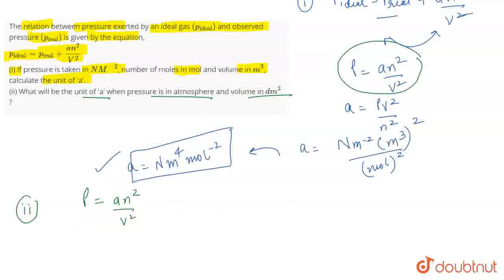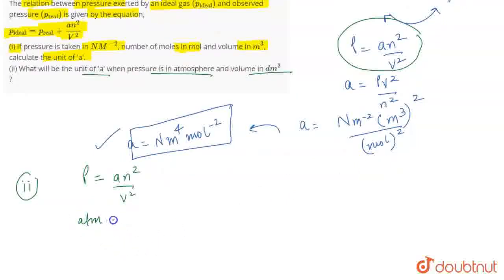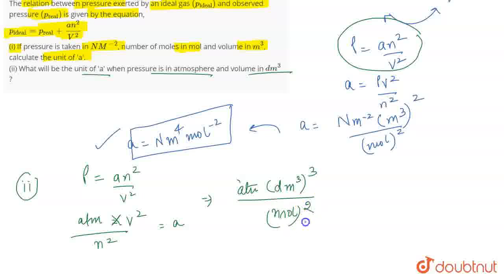Now you have to take the unit of pressure as ATM and calculate the unit for A. So again, you will do V squared divided by n squared and this will give you the unit of A. So this will become ATM, and now the volume will be taken in dm cubed, cubed, divided by mol squared.